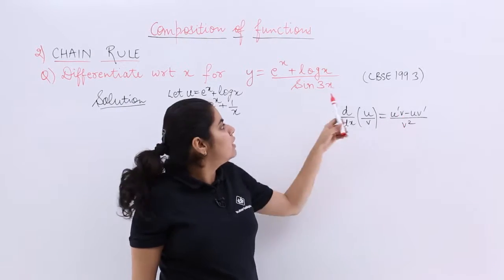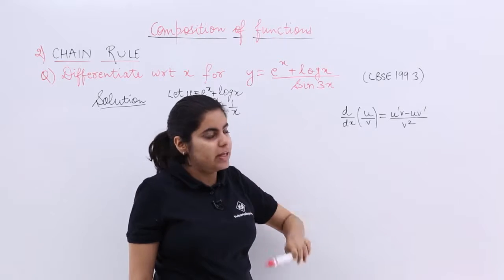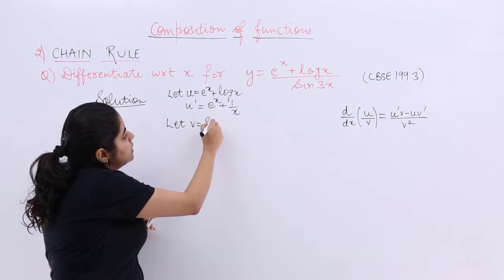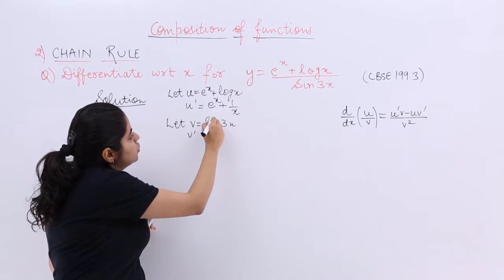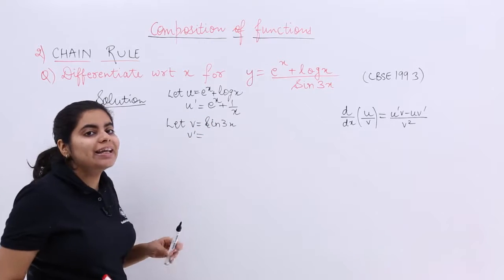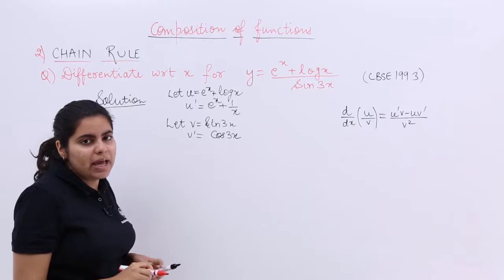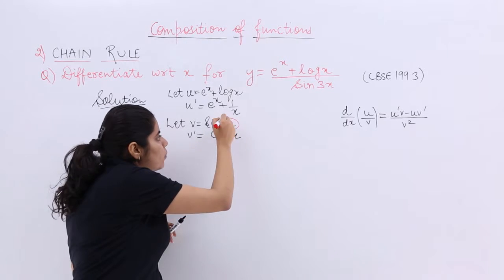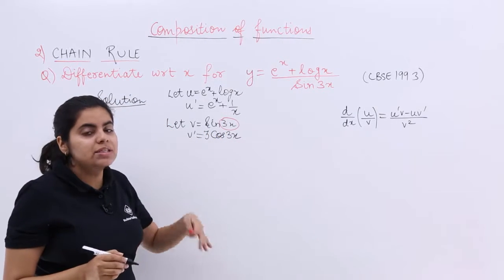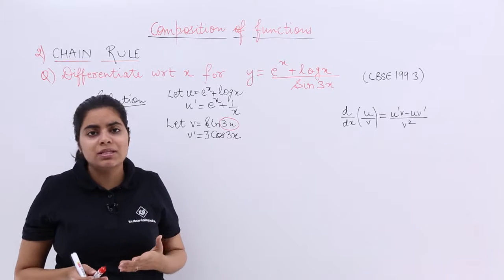Next, v is the denominator: v = sin 3x. What is v'? Apply the chain rule. Had it been sin x, the differentiation was cos x. But this time it is 3x, not just x. The differentiation of 3x brings out 3 as a constant, and x differentiates to 1. So v' = 3 cos 3x.